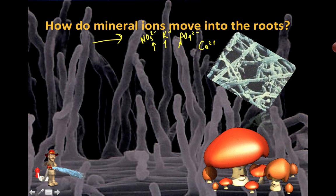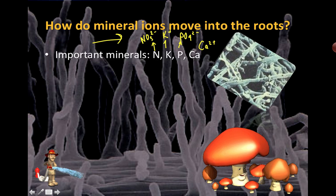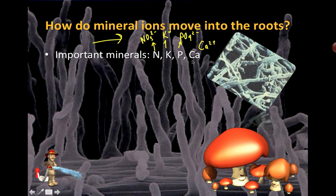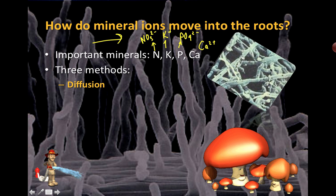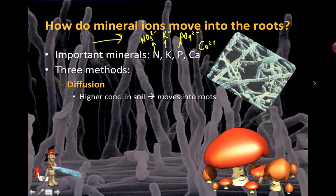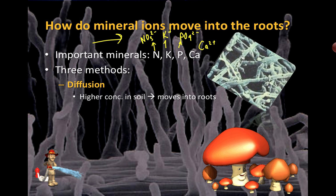There are a few ways that mineral ions can actually be moved in. We're primarily talking about nitrogen, potassium, phosphorus, and calcium taken up in the form of ions. One way is through diffusion — if there's a higher concentration outside of the root hairs, it's just a matter of diffusion. Higher concentration in the soil is going to move into the roots.